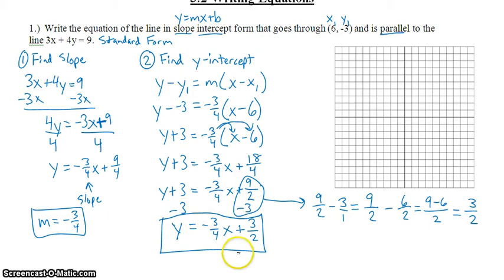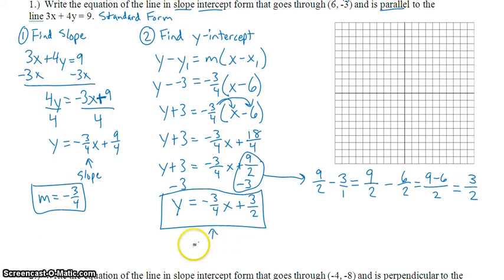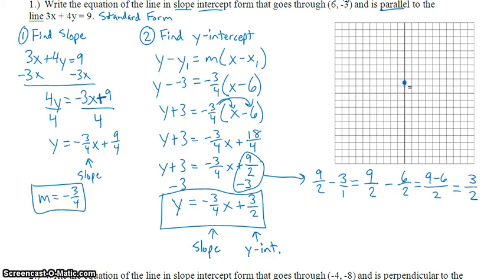To check that answer, I'm going to graph this line. Negative 3-fourths is my slope and my y-intercept is 3-halves. 3-halves is really 1.5, so on the y-axis I plot 1 and a half. From there I have a slope of negative 3-fourths, so I go down 3 and right 4. To get a negative slope, I can also go up and to the left.